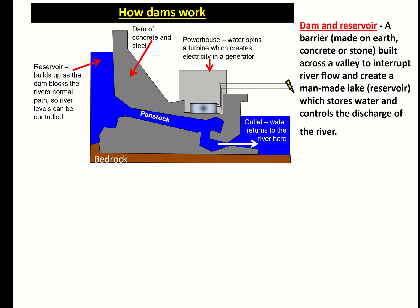The first strategy is a dam with a reservoir behind it. A dam is a barrier, often made of earth but normally of concrete or stone, built across a valley to interrupt river flow and create a man-made lake called a reservoir. You can see the wall of concrete and steel; the reservoir builds up behind as the river is blocked. The penstock allows water out, which often turns a turbine to create electricity in a generator sent to the national grid.